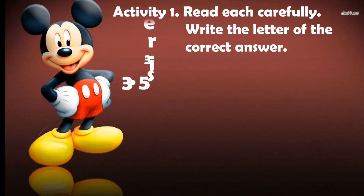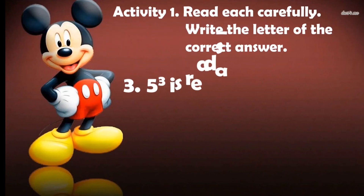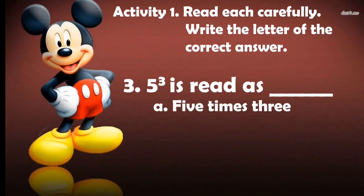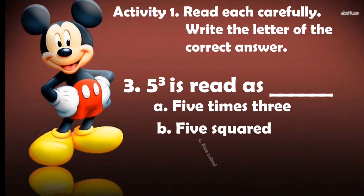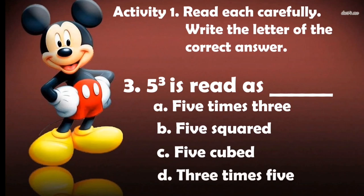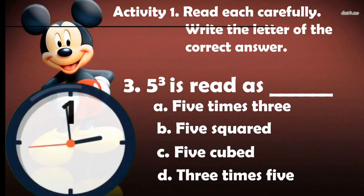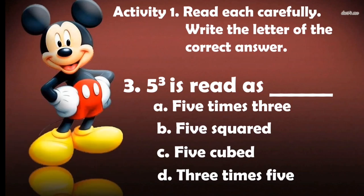Number 3 is read as: A. 5 times 3, B. 5 squared, C. 5 cubed, D. 3 times 5. You are correct!